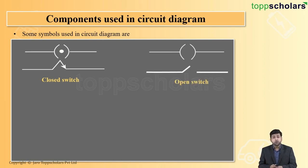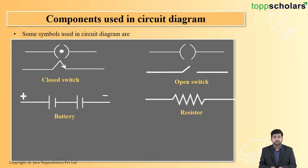The second component is the open switch. That means the circuit is off. The third component is the battery. That is nothing but the main source of supply. And the fourth one is a resistor. A resistor is a device which regulates the flow of current.